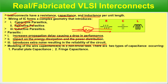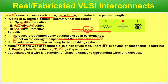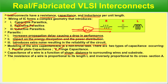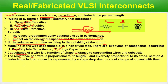Modeling of wire capacitances is a non-trivial task — it's really tough work. There are two types of capacitance: parallel plate and fringe capacitance. Capacitance of a wire is a function of shape, distance, and surrounding wires and substrate. The resistance of a wire is proportional to its length and inversely proportional to its cross-sectional area A — R = ρL/A. Inductance in interconnects is represented by voltage drop due to rate of change of current with time.